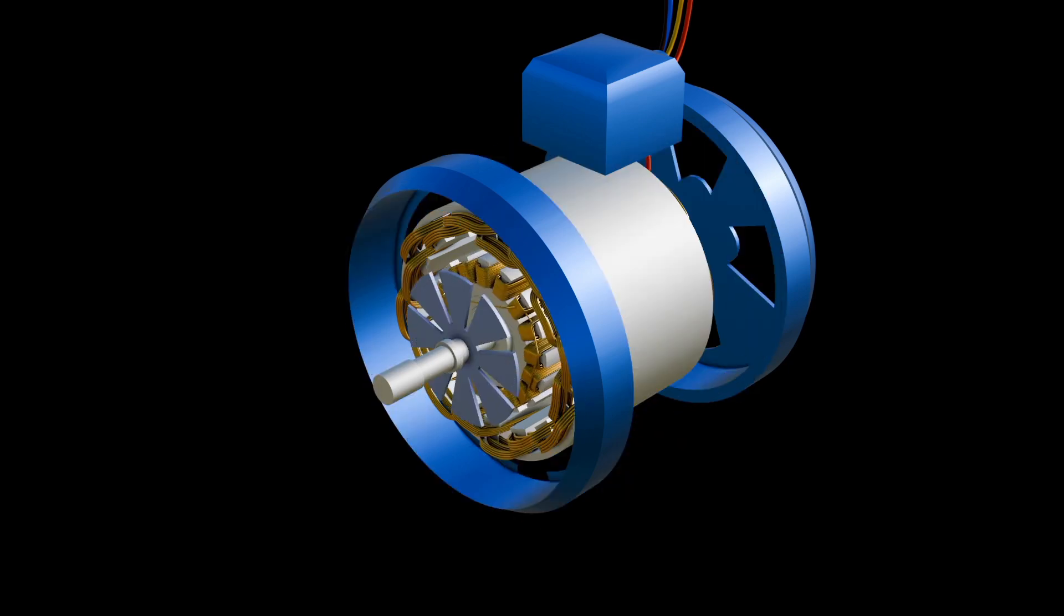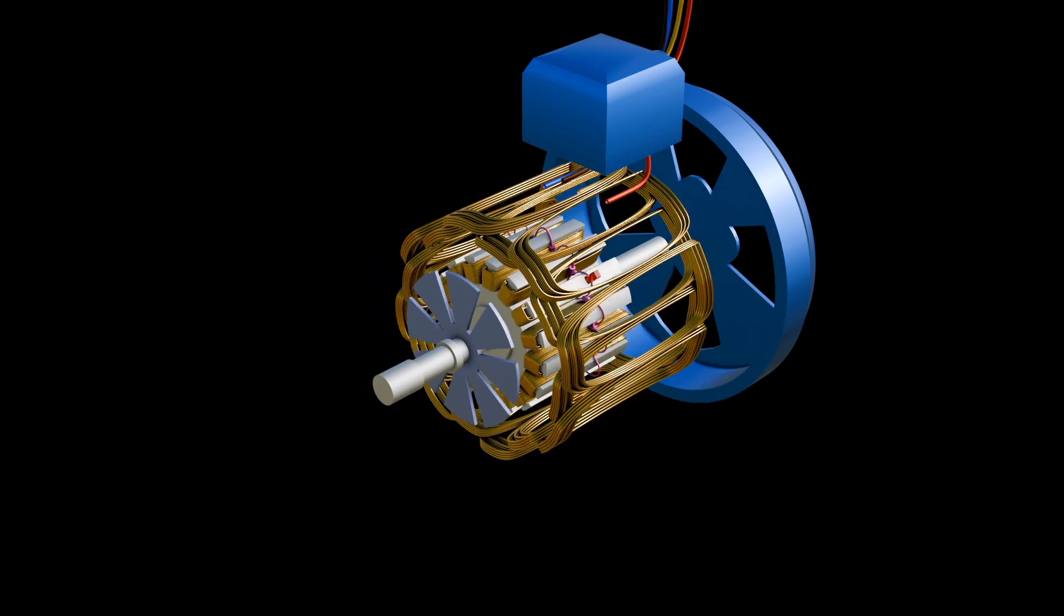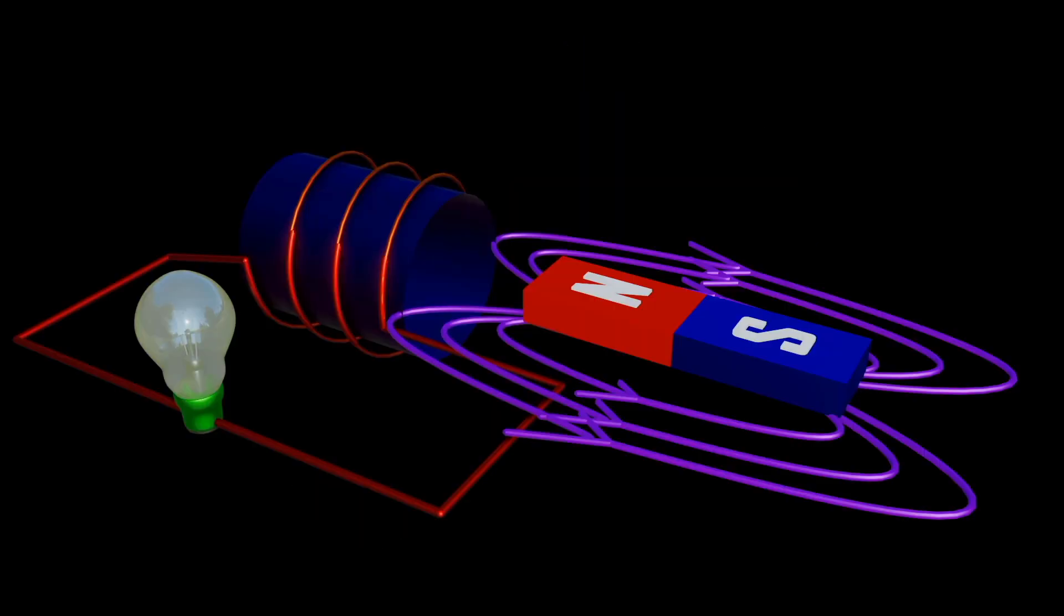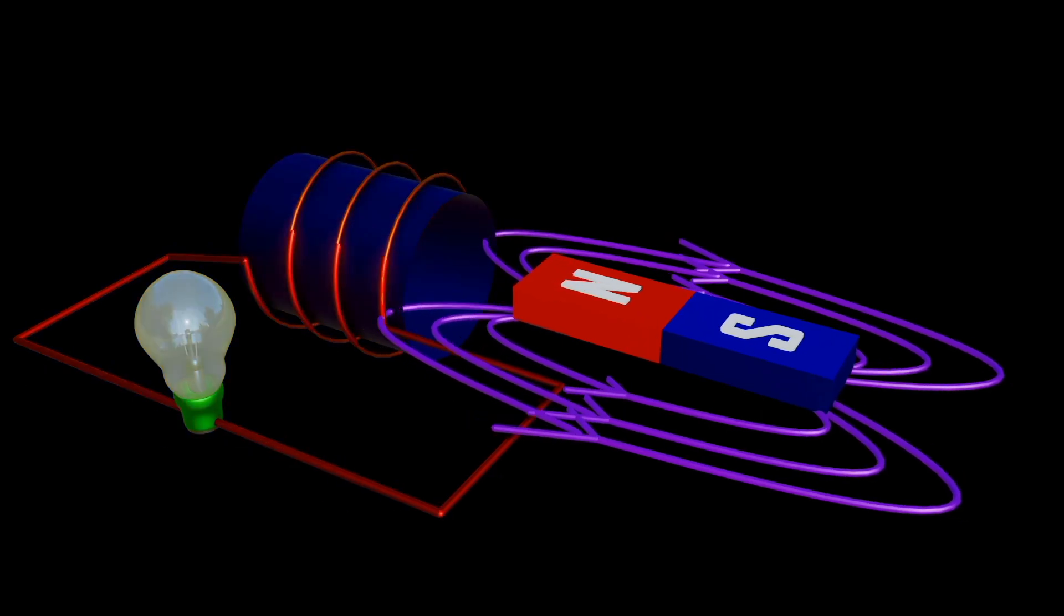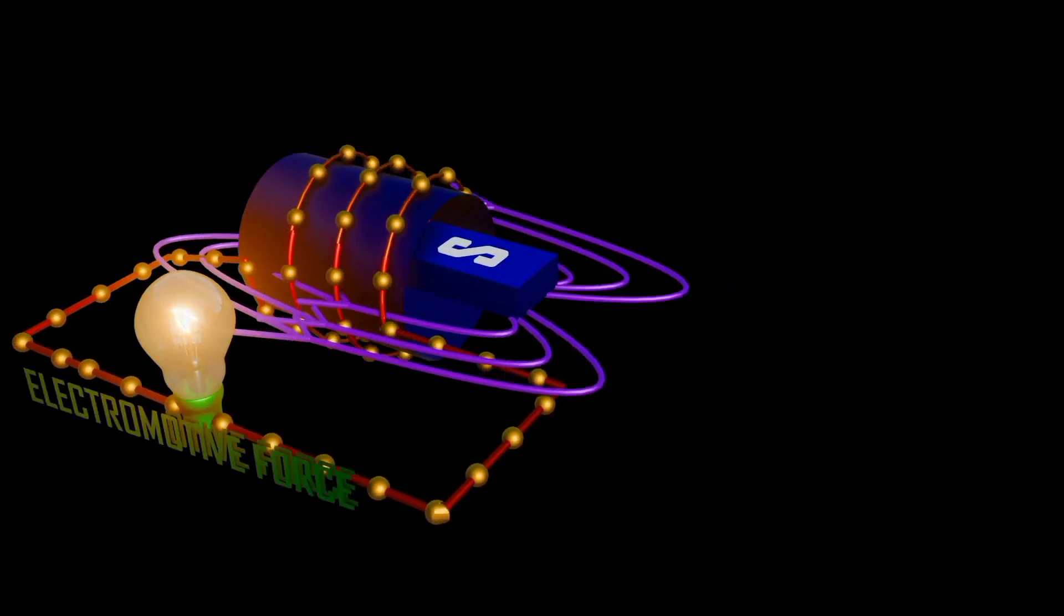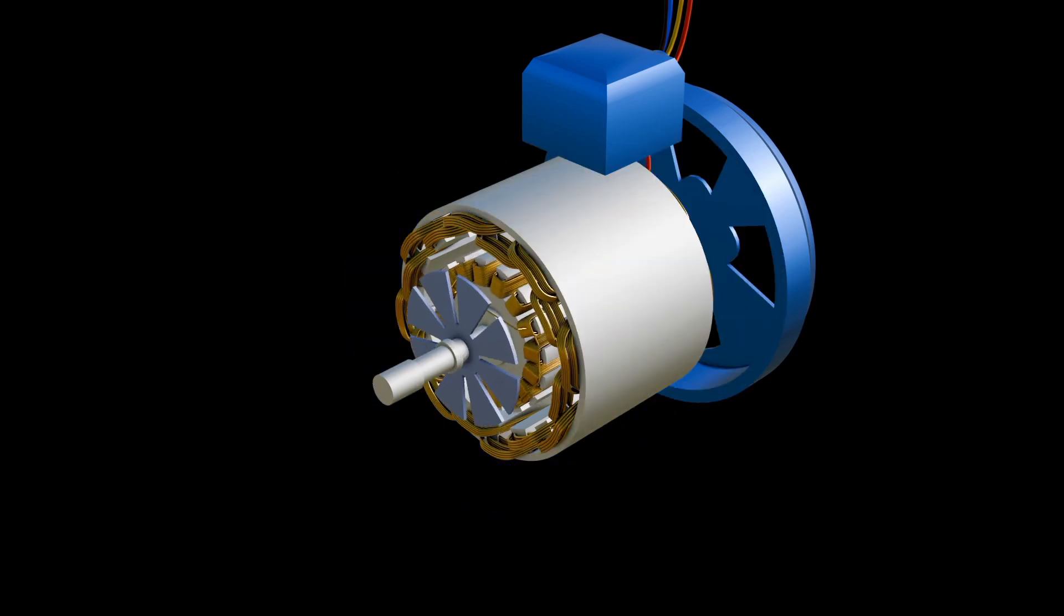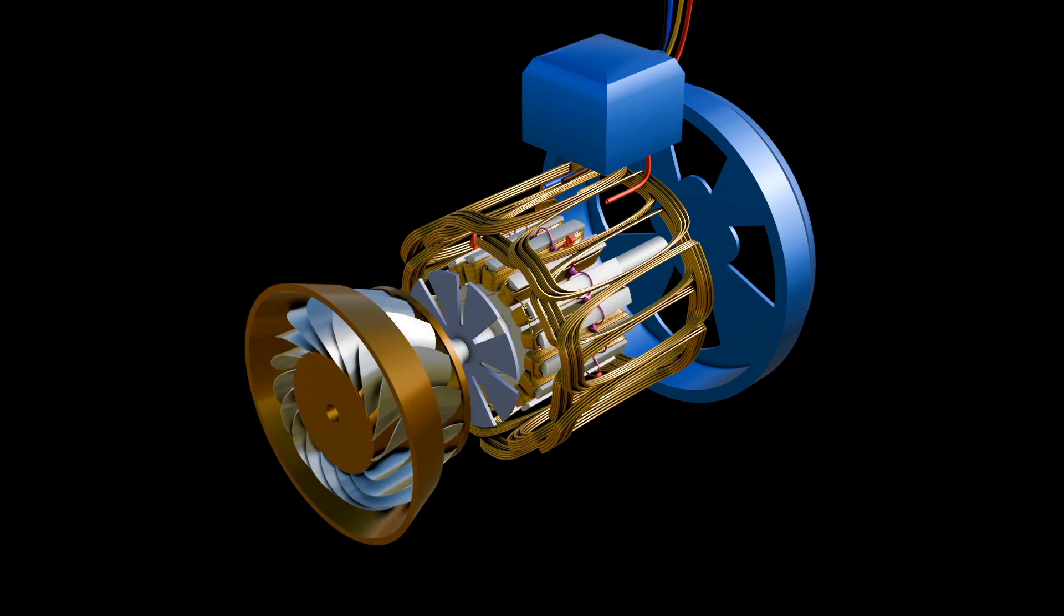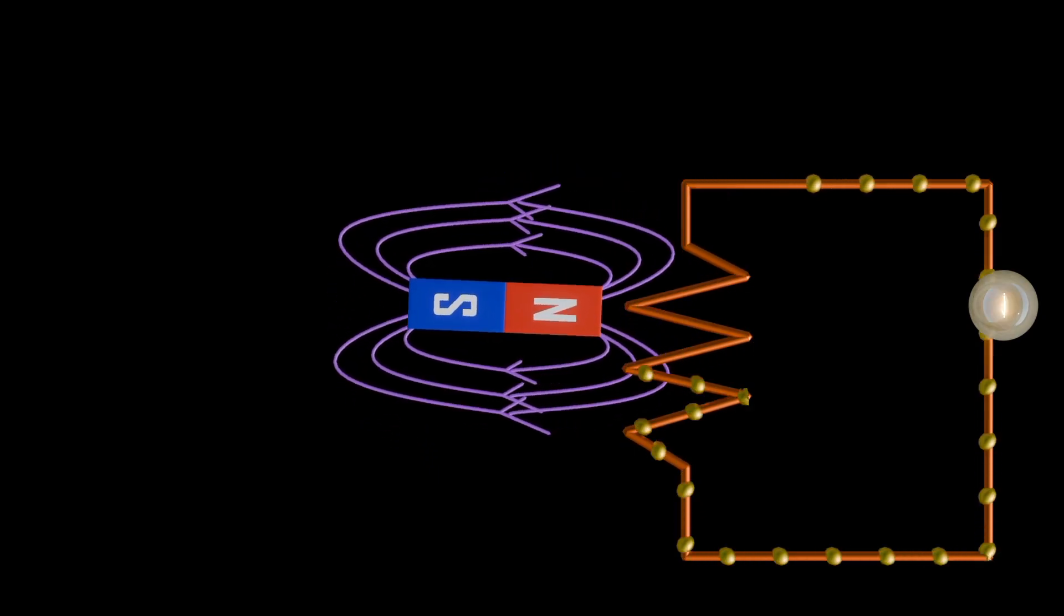Alternators or generators work like motors but in reverse. They work based on Faraday's law of electromagnetic induction, which states that current is induced in a conductor inside a magnetic field when there is relative motion between that conductor and the magnetic field. Typically, a rotor with induced magnetic fields rotates inside stationary conductor coils. The fields cut across the stator conductors, generating an induced electromotive force. But first, let's understand the concept of electricity.